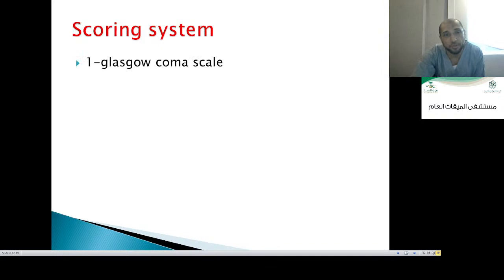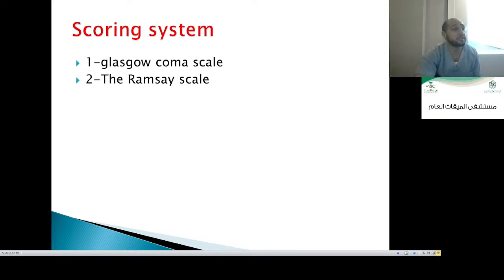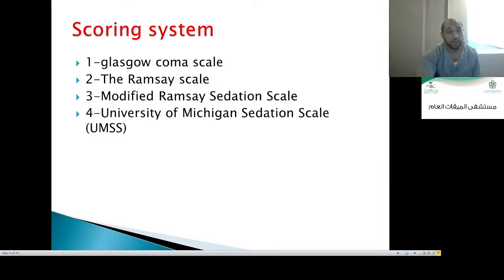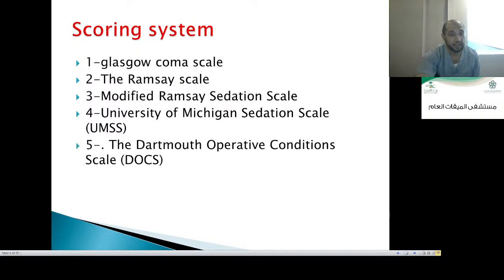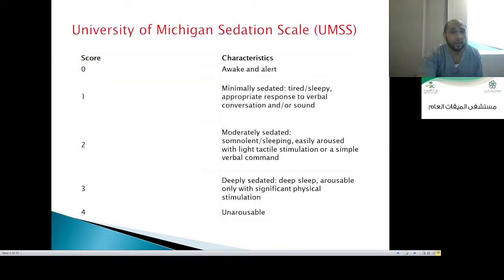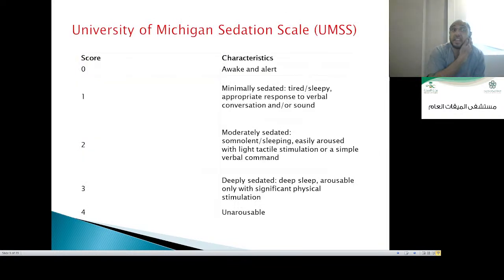I will mention the Glasgow scale, as the doctor mentioned, the Ramsay scale, Modified Ramsay scale, University of Michigan-Sebastian scale, and the DART motor operative condition scale. We have a lot of them. I have selected only 5, and I will now describe one of them — the University of Michigan-Sebastian scale — because it's a very easy one.